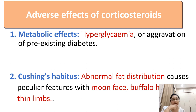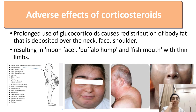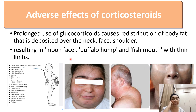Next is the Cushingoid habitus. It is an abnormal fat distribution causing peculiar features like moon face, buffalo hump, and thinning of the limbs. Prolonged use of corticosteroids causes redistribution of body fat, deposited over the neck, face, and shoulders. Ultimately the face becomes round like the moon — so it is called moon face. Fat deposition over the back of the neck is called buffalo hump, and fat deposition over the cheeks causes facial rounding and thinning of the limbs.